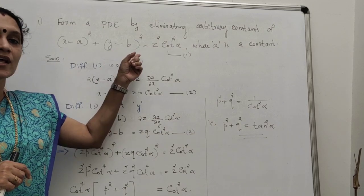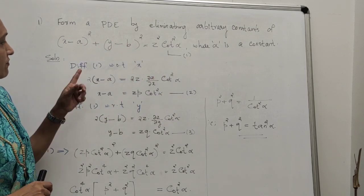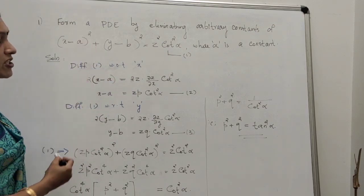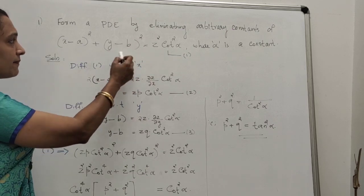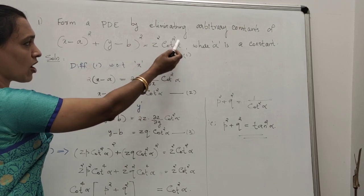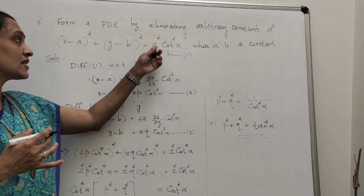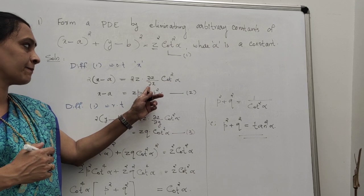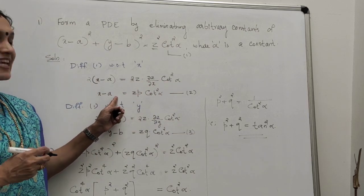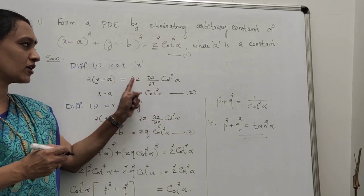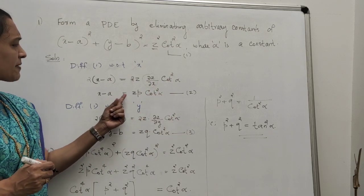Now, how can we eliminate these two arbitrary constants? First, put the given equation as equation 1. Differentiate with respect to x: 2(x - a) + 0 = 2z · (∂z/∂x) · cot²α. Cancelling 2 from both sides gives x - a = z · p · cot²α. Put this as equation 2.